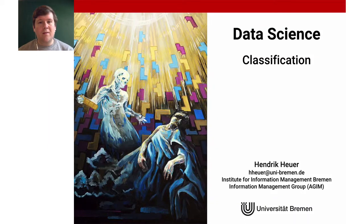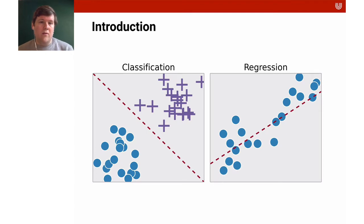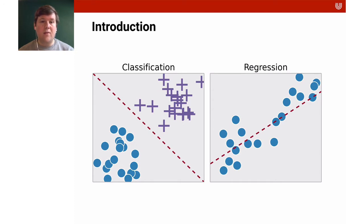Welcome to the lecture on classification. Today we're going to talk about one of the most important tasks in supervised machine learning. Another important task in supervised machine learning is regression. The main difference is that with classification we have distinct categories, classes, and we try to separate data points into these classes, whereas in regression we try to predict a real value, a number.